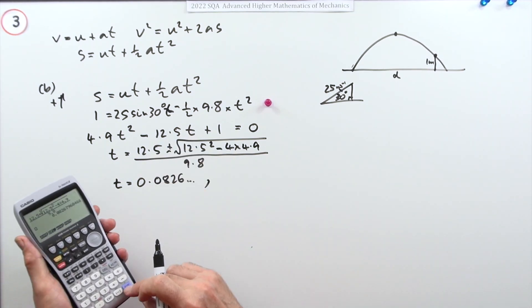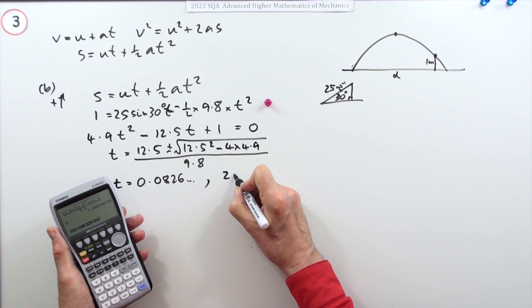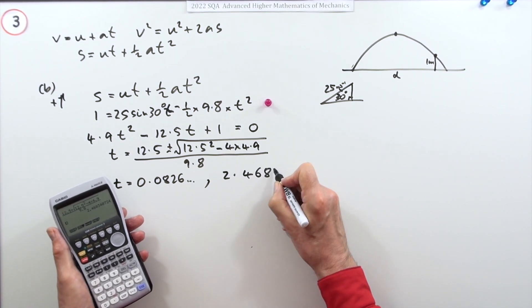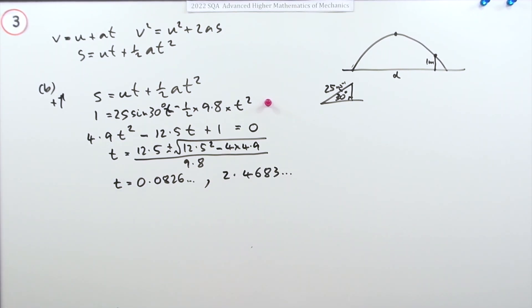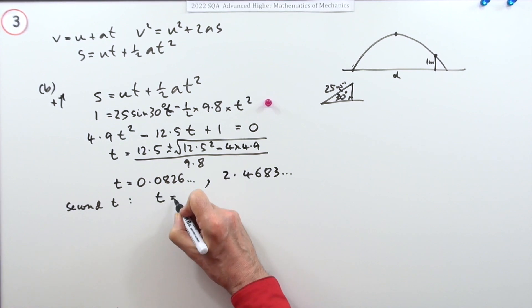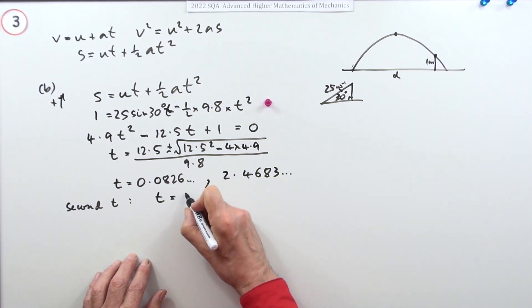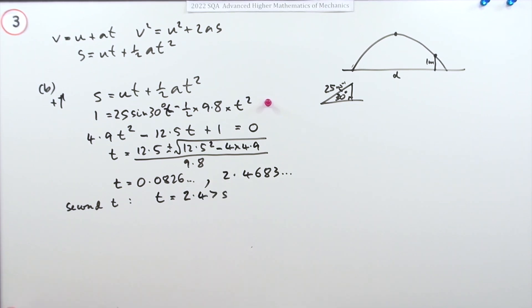Then change it for a plus and this time you get 2.4683 and so on. I don't know if I have to give a reason here, it'd have to be the second t. So in this case t equals, I'll just round that off, 2.47 seconds. That gets a mark.